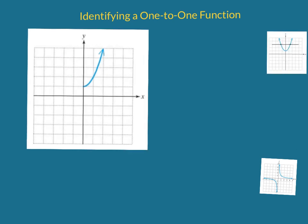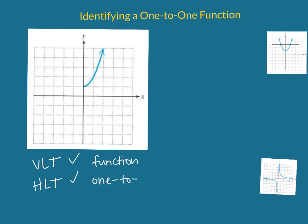Let's take a look at the next graph. We want to see if it passes the vertical line test and the horizontal line test in order to determine if it's a one-to-one function. Does it pass the vertical line test? Yes — no matter how many vertical lines we draw, they will only hit this graph once. So it's a function. Now let's see if its inverse is also a function by checking the horizontal line test. It does pass. No matter how many horizontal lines we draw, they only hit the graph once. So it is specifically a one-to-one function.